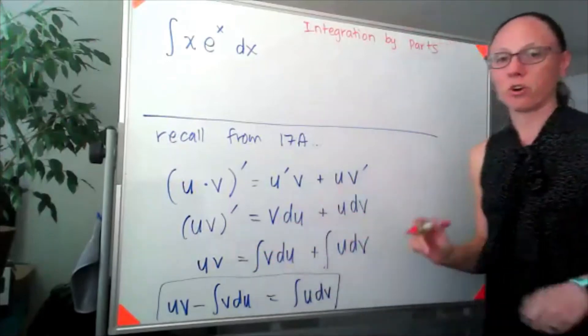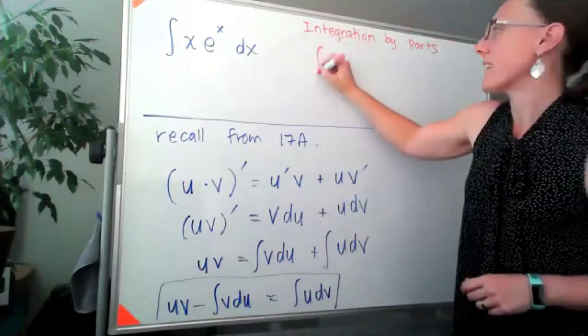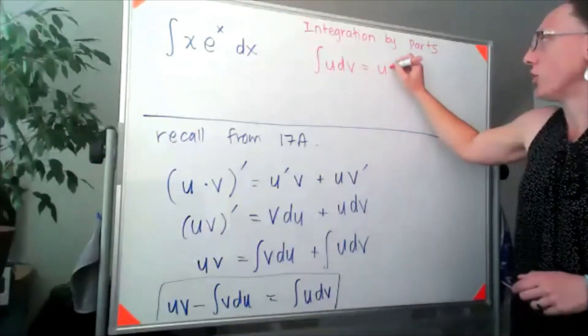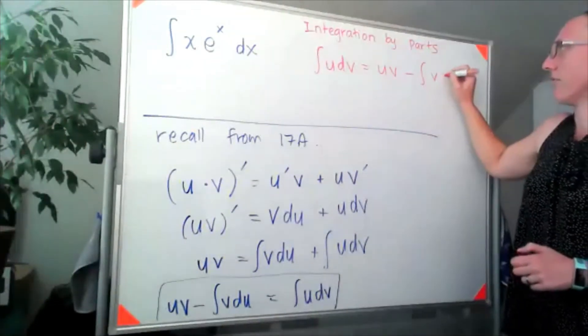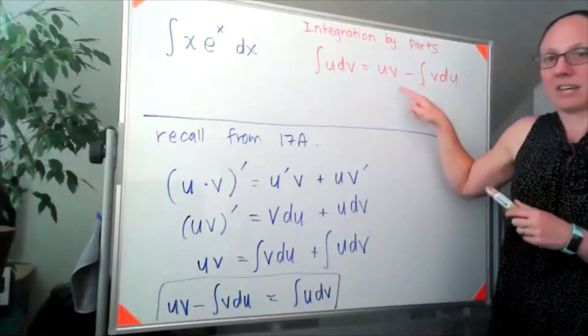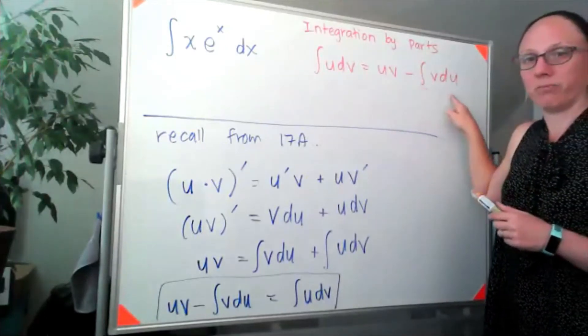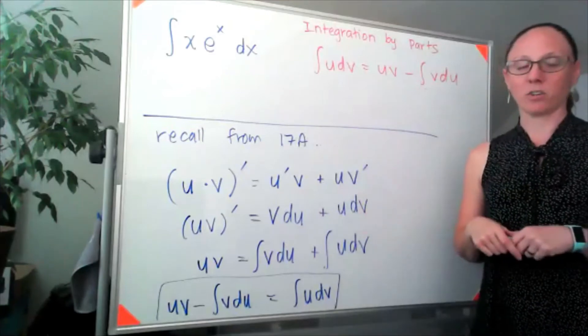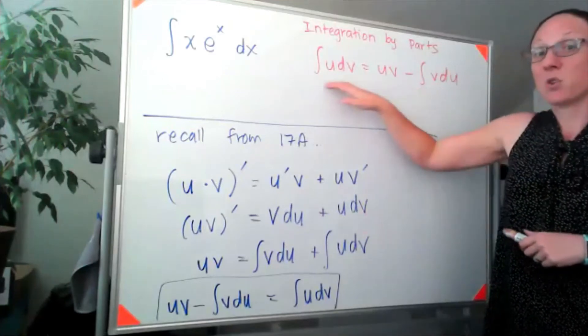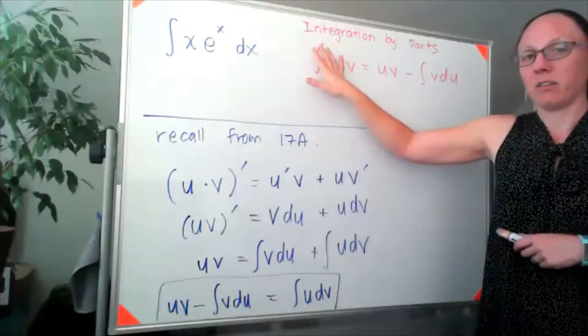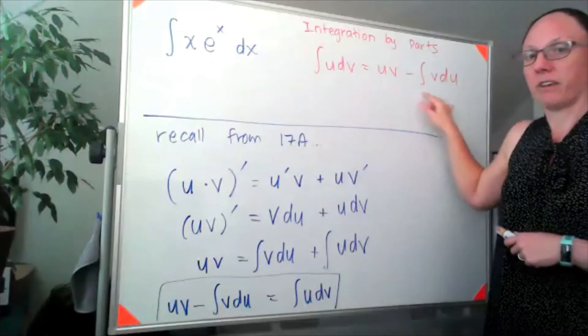And usually we flip the order around on this. And we say the integral of u dv is equal to uv minus the integral of v du. Or as I mentioned before, I remember this as ultraviolet voodoo. So when I get stuck and I have to use integration by parts, I'm swapping out one integral that I don't know how to work with for some ultraviolet voodoo.